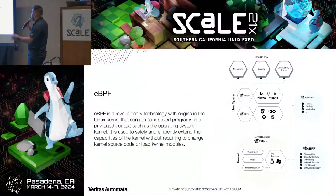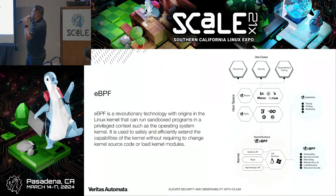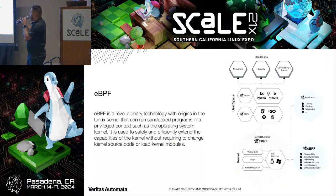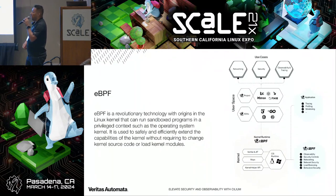Looking at different use cases for eBPF, there are three important pillars: networking, security, and observability and tracing. Right now, there are open source and private projects incorporating network policies, enforcing the network, and security itself. Notable projects in the cloud-native ecosystem include Cilium, Falco, Katran, and Pixie. For SDKs, eBPF supports Go, C++, and Rust — lower-level programming languages — because this is focused on the low level.